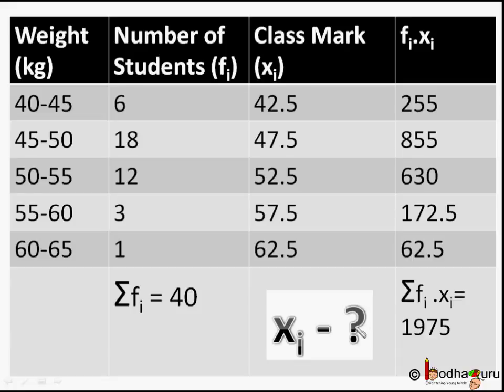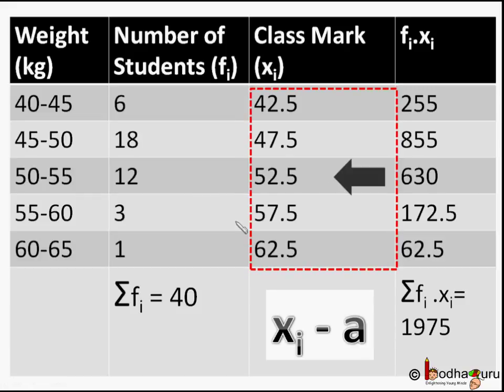We cannot take any random value. Here we introduce a term called assumed mean denoted by A. It is the median or middle value of all the class marks. Like here in our example, the median value of all class marks is 52.5 as they are in sorted order. So let us take a equal to 52.5 and we would subtract a from each of the xi.